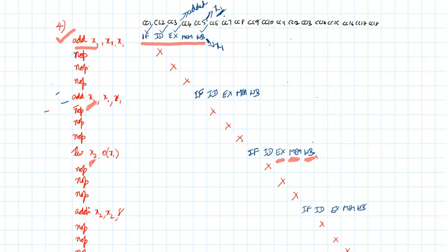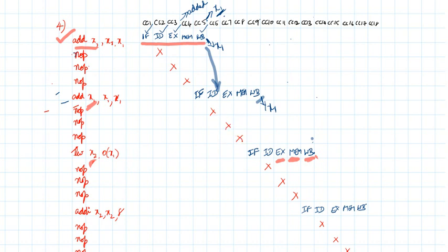At the end of clock cycle five, instruction fetch of I2 is done and while decoding we get the updated value of x1. So x1 will be available for execution. At the end of the ninth clock cycle we are updating x1 again. For this dependency, we need to insert three NOPs so that the updated x1 is reflected correctly.